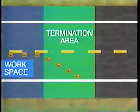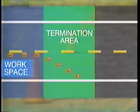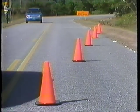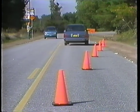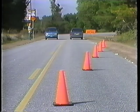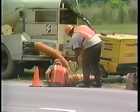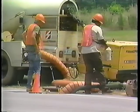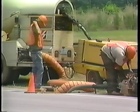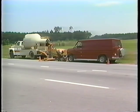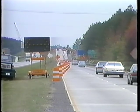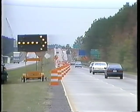The termination area provides a short distance for traffic to clear the activity area and return to the normal traffic lanes. It extends from the downstream end of the activity area to the end road work sign. A downstream taper may be placed in the termination area. For some work operations, such as a single location utility or maintenance repair, it may not be necessary to display an end road work sign because it will be obvious to drivers that they have passed the activity area. Avoid gaps in the traffic control at work zones that may falsely indicate to drivers that they have passed the activity area.